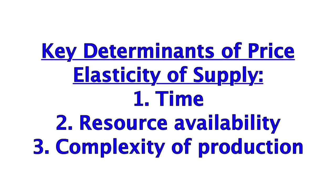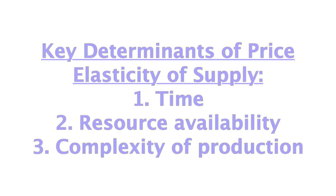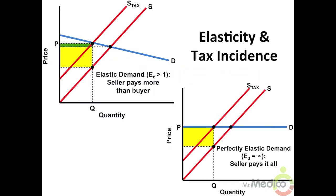Other determinants of supply elasticity include the availability of resources and the complexity of the production process. In Noble 11, we will see that sellers experience a greater burden of a per-unit tax than buyers when the supply curve is more inelastic than the demand curve.